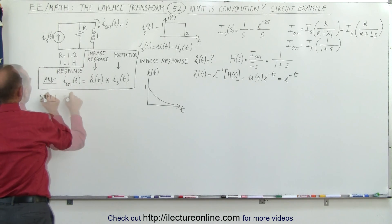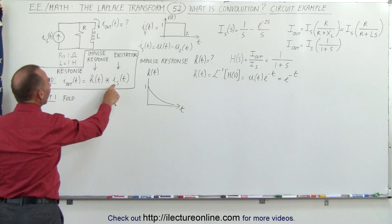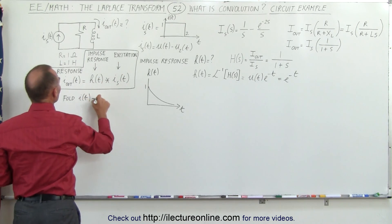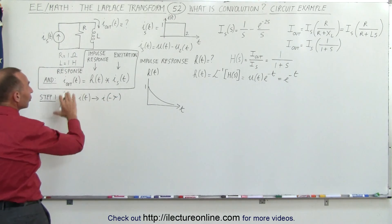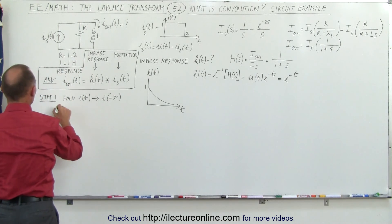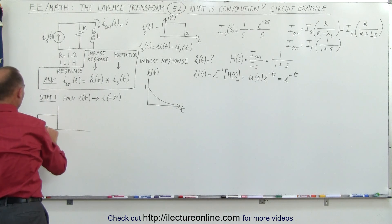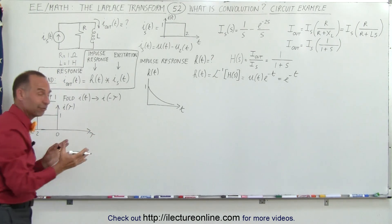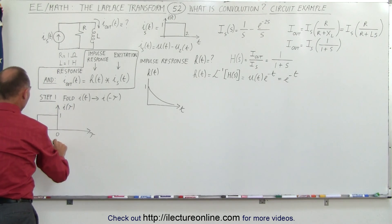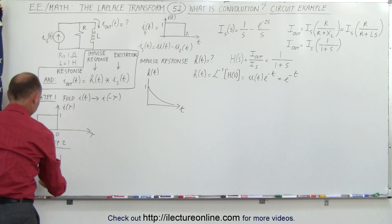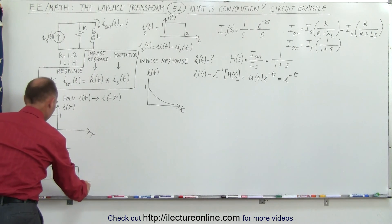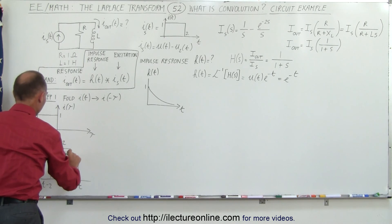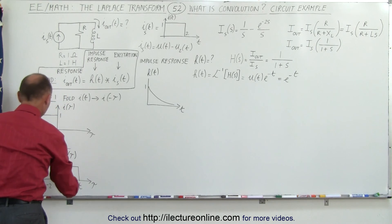Step one: we fold. Remember that h convolved with i equals i convolved with h, so it doesn't matter which we fold and slide. We fold i(t) to get i(-τ) — its mirror image across the vertical axis — which gives a pulse from -2 to 0. Then step two: we slide the function across. After sliding by t, we have the pulse spanning from t-2 to t, with height equal to 1. That's i(t-τ).